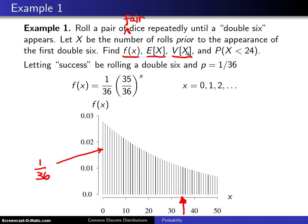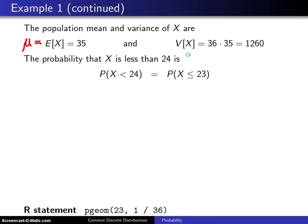And now the population variance. We also have a formula for the population variance, and it was (1 - p) / p squared. And when you plug in the values, it turns out that is 1260, and remember the units here are going to be number of rolls, which means the units here will be rolls squared.